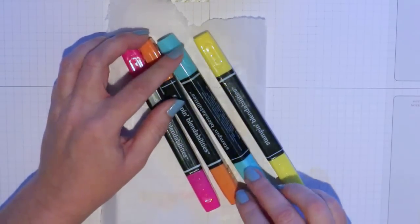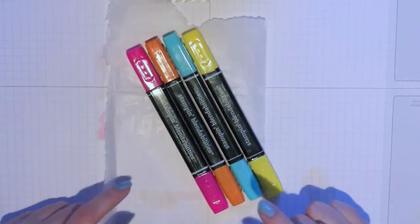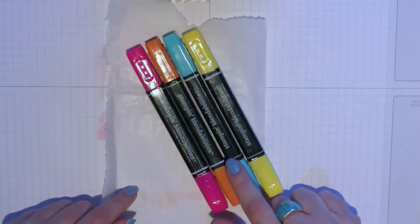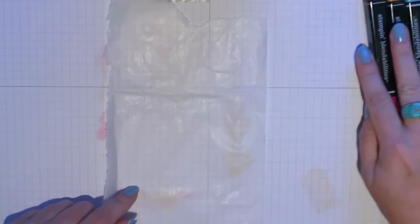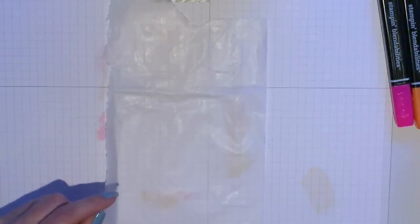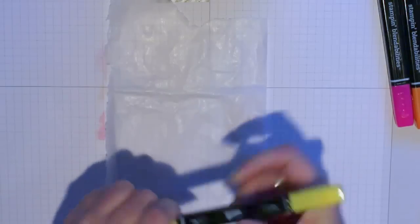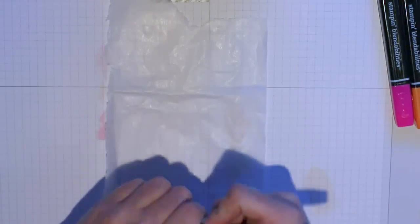Now here are my blendabilities: Coastal Cabana, Daffodil Delight, Pumpkin Pie, Melon Mambo are what markers you need for the color scheme that I'm going to use and this technique is so easy.